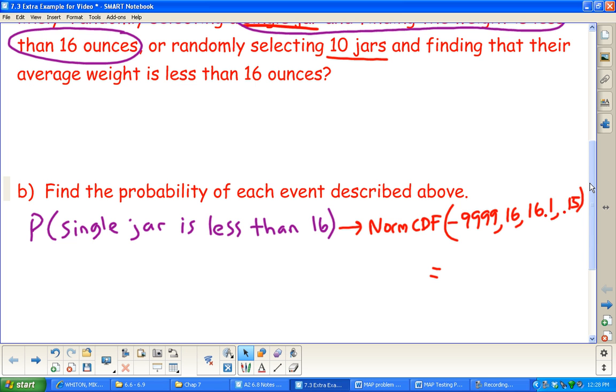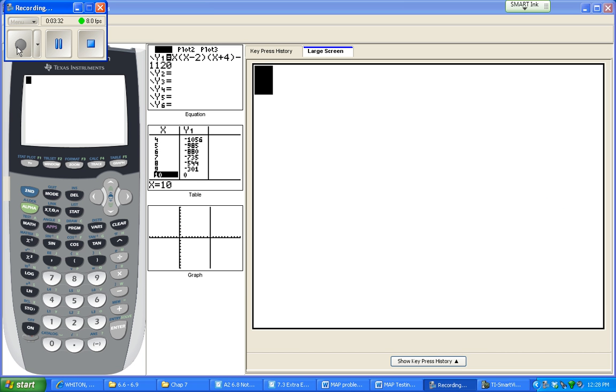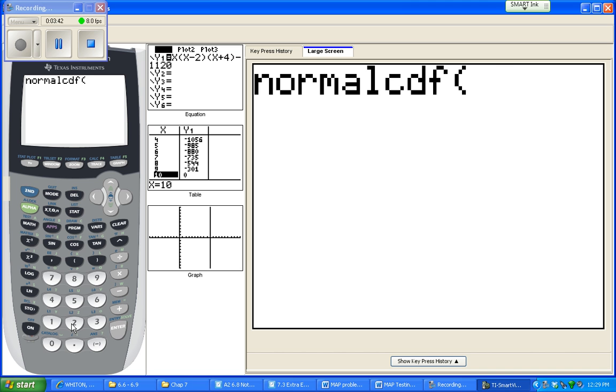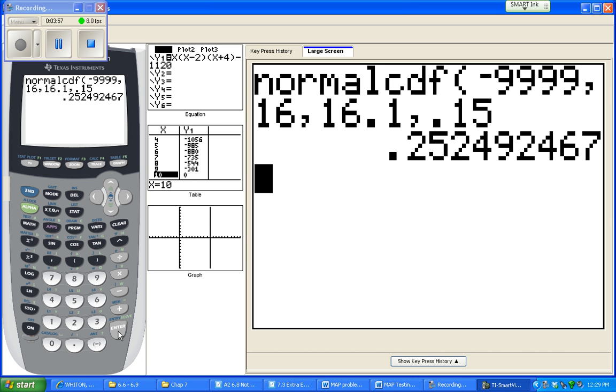Let's find that. Let's do the calculation here. It's a normal distribution, so second distribution, normal CDF, and we said it's from negative 9999, just to give us some lower bound, all the way up through 16.